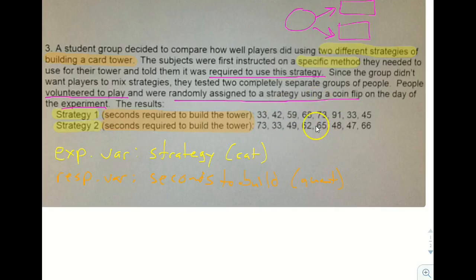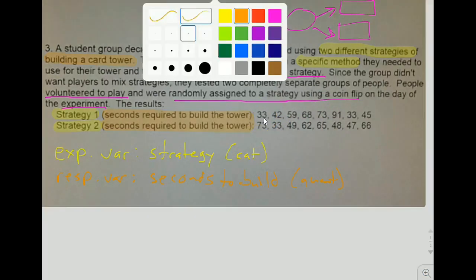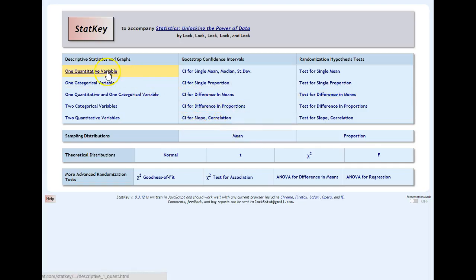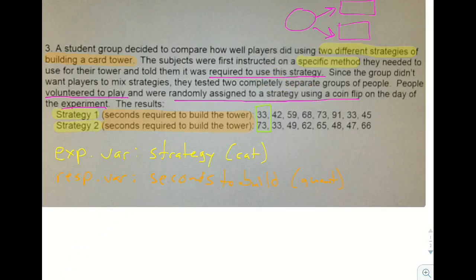This situation is different than matched pairs because these individuals are not the same individual. That 33 and that 73 do not come from a single pair of twins or the same person twice — they are two totally separate people. There's nothing with a special connection between these numbers, so we don't subtract them and treat it like a single quantitative variable. That's only for matched pairs. In the next two videos, we'll focus on confidence intervals — finding how different two things are — and hypothesis tests asking whether these groups are different.